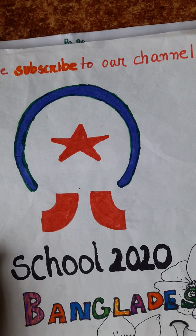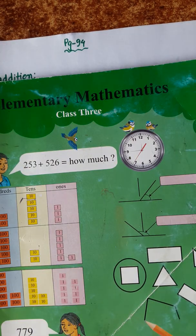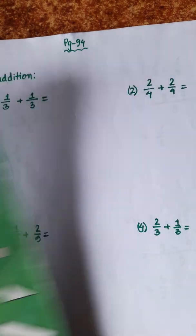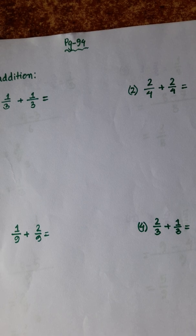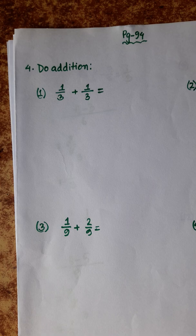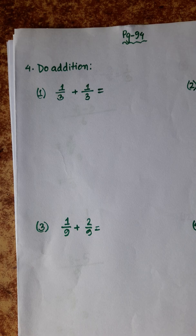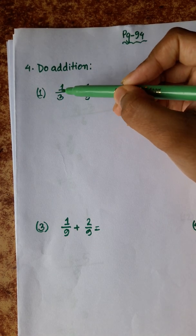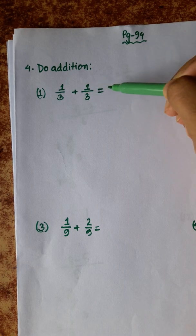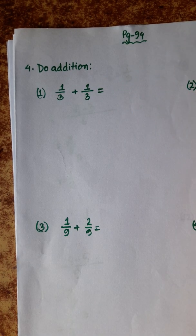Welcome to School 2020, camera elementary mathematics class 3a, page 94 — fractional addition and subtraction. Our first addition of fractions is number 1: 1 by 3 plus 1 by 3 is equal to what.